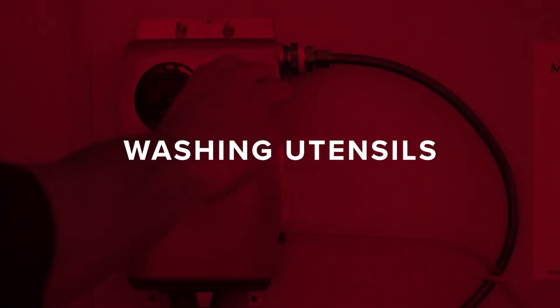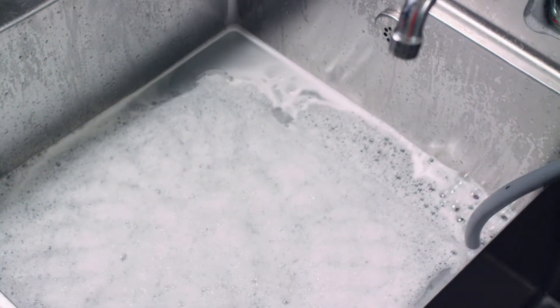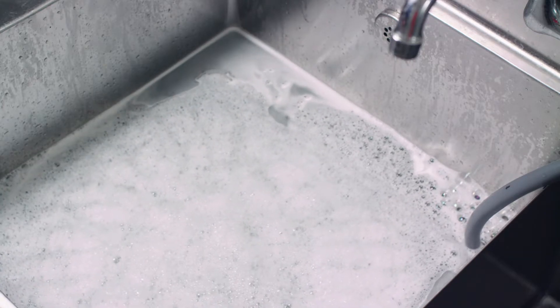Washing utensils. Start by filling a sink with hot water and pre-soak solution. Allow soiled utensils to soak for 15 to 30 minutes.